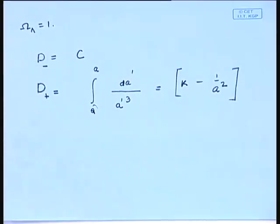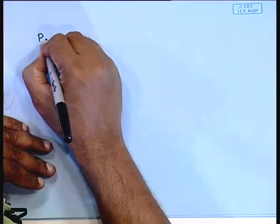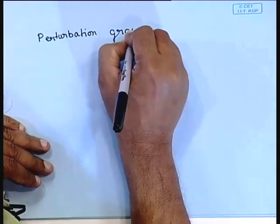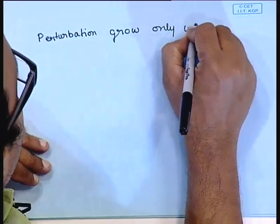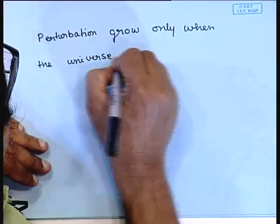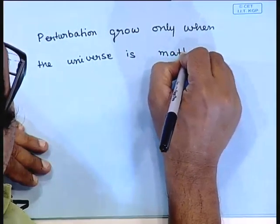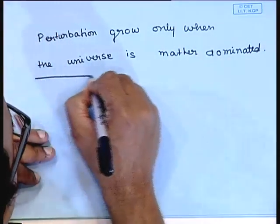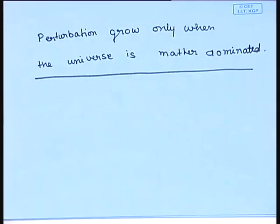What we see from this analysis is that perturbations grow only when the universe is matter dominated. Perturbations do not grow when the universe is dominated either by curvature or by the cosmological constant.